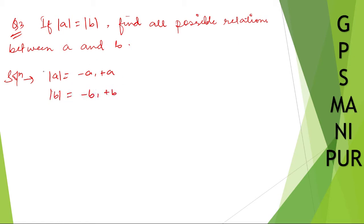So, this statement, mod of A is equal to mod of B, we can write as first. Let me write down first. We can write down minus A is equal to minus B.